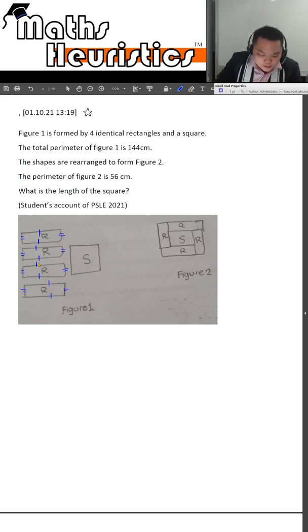So over here we have 8 rectangular lengths and 8 rectangular breaths and we have 4 square lengths in figure 1.